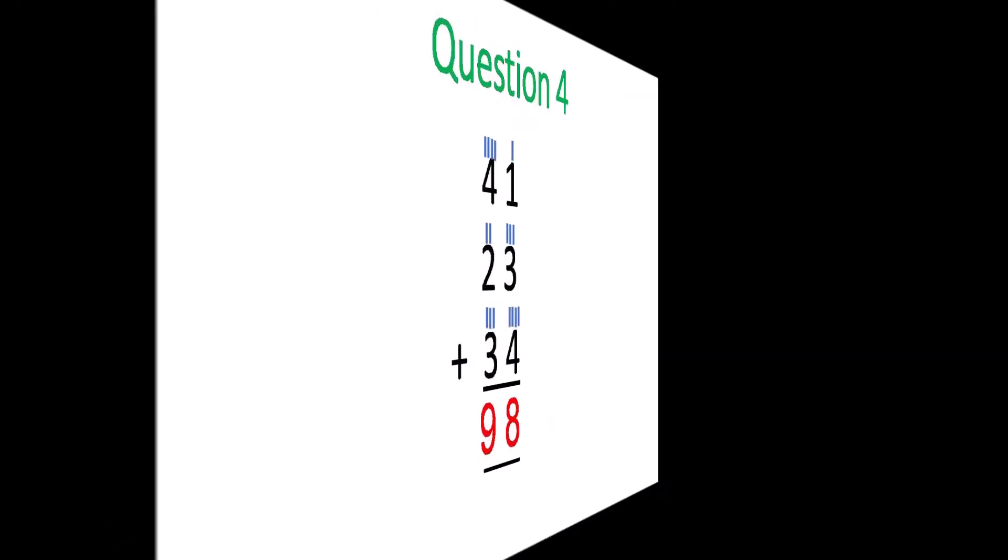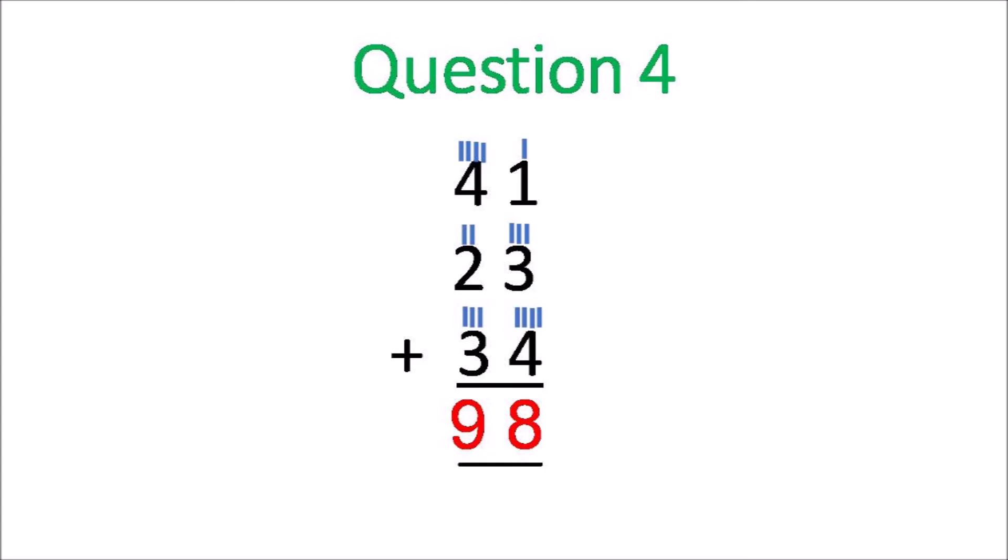Question 4. 41 plus 23 plus 34. Put your sticks out, your circles, and then add: 4 and 3, 7 and 1 is 8. 3 and 2 is 5, 5 and 4 is 9, so your final answer is 98.